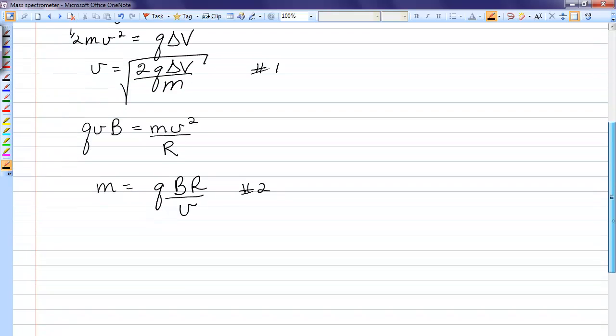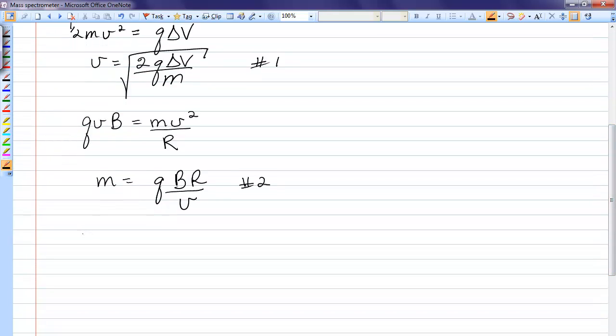We'll now sub equation one into equation two to eliminate the velocity. So, I have my Q, B, R, and instead of velocity, I'm going to write root m over 2Q delta V, flipped over because V's on the bottom.